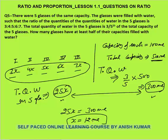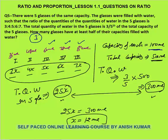How many glasses have at least half their capacity filled with water? Each glass has capacity 100 ml, so half is 50 ml. Checking: 36 ml (no), 48 ml (no), 60 ml (yes), 72 ml (yes), 84 ml (yes). The 3rd, 4th, and 5th glasses are filled with at least half their capacity. The answer is 3.